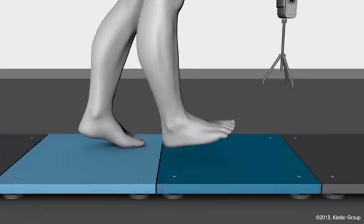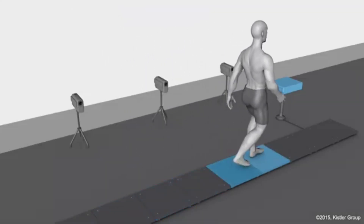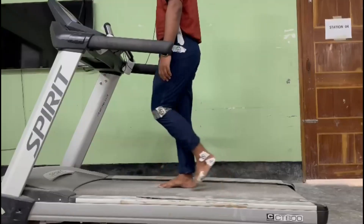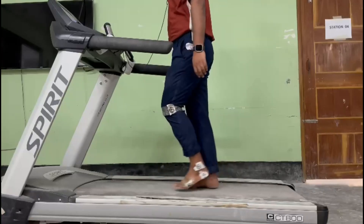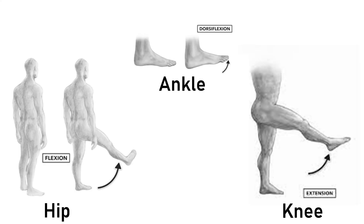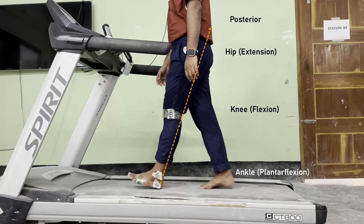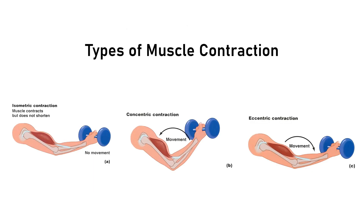Ground reaction force is the reaction force given by the ground when we apply our body weight on the ground as a force. This ground reaction force is mainly responsible for creating movement at different joints. When this ground reaction force crosses the joints anteriorly, it creates flexion in the hip, extension in the knee, and dorsiflexion in the ankle. If this ground reaction force crosses the joints posteriorly, then it creates extension in the hip, flexion in the knee, and plantar flexion in the ankle.